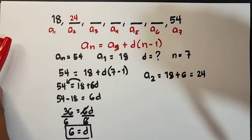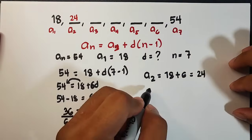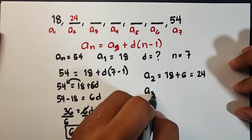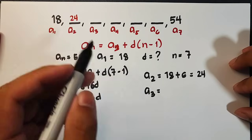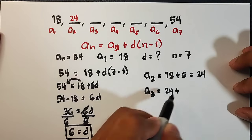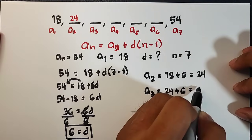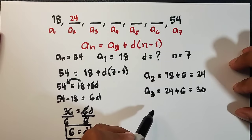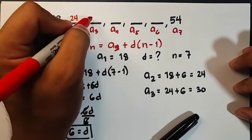Since we already have the 24, your second term, we can definitely find the value of a sub 3. Using 24, we have 24 plus your common difference, 6. So 24 plus 6 is 30. So this is 30.